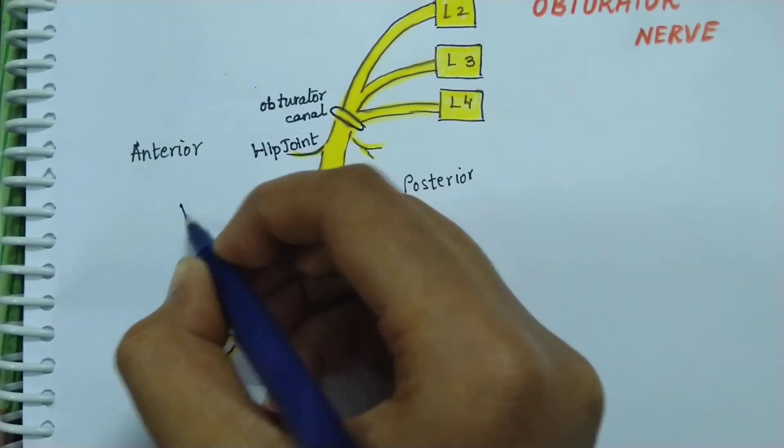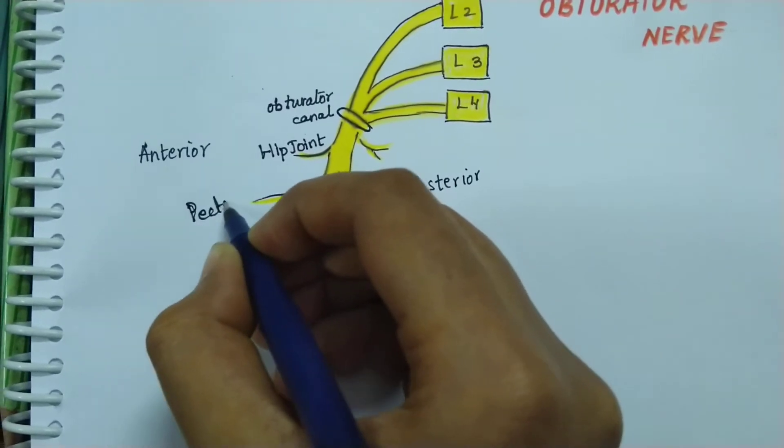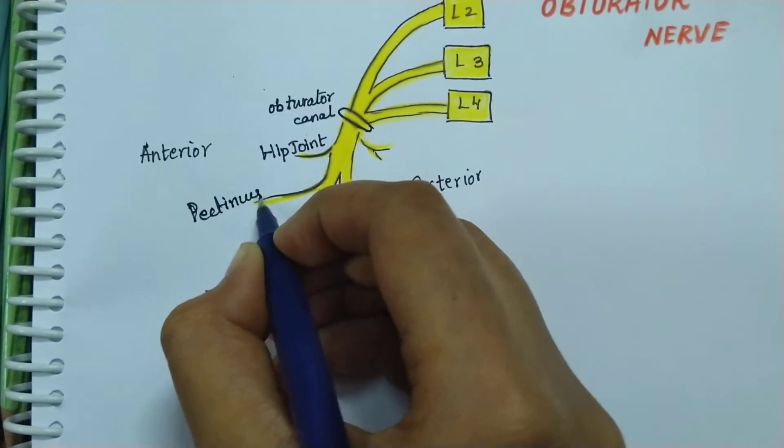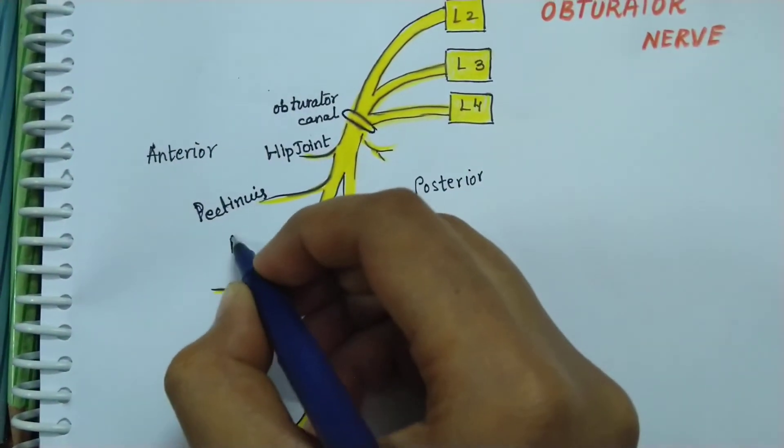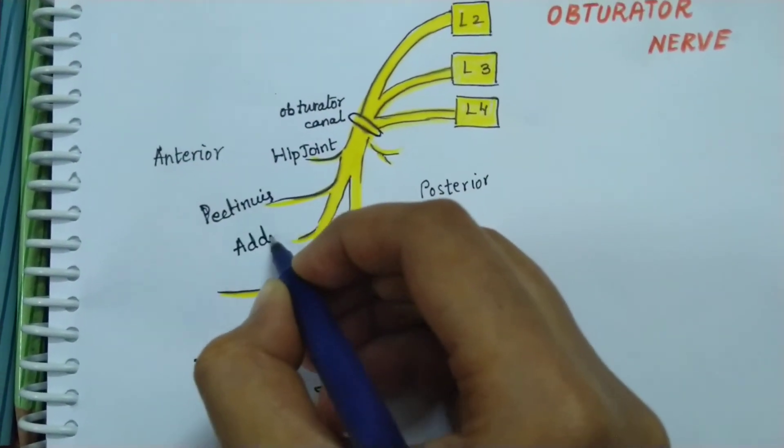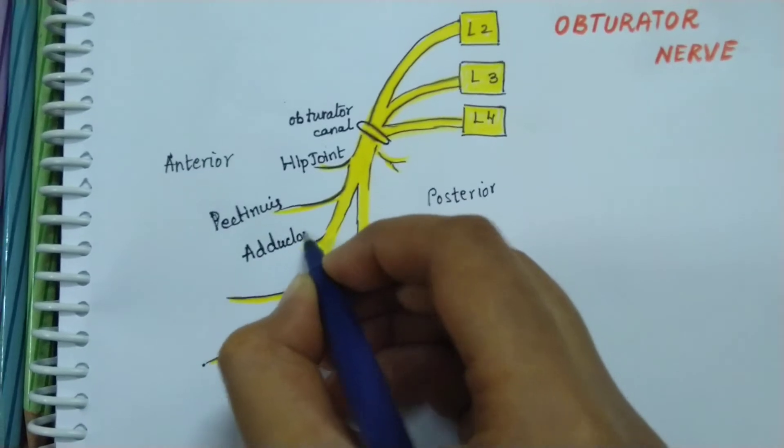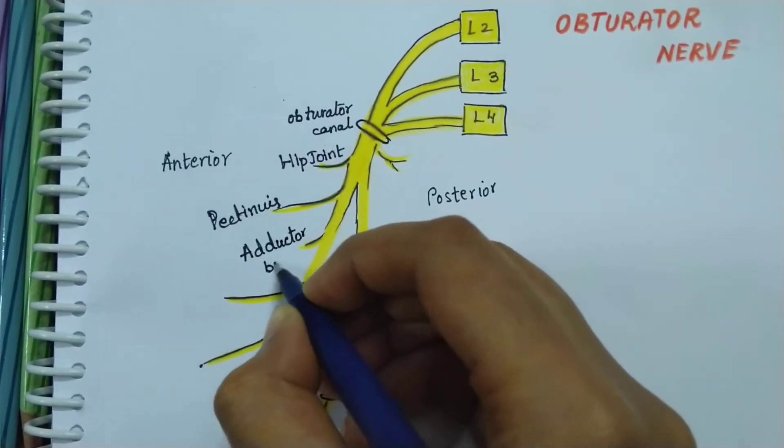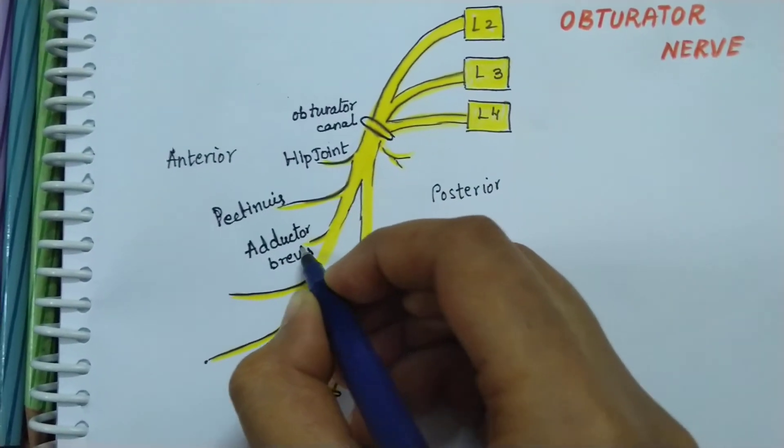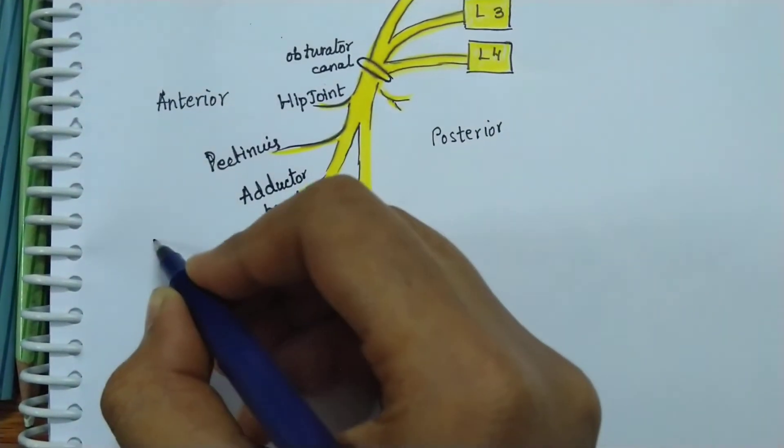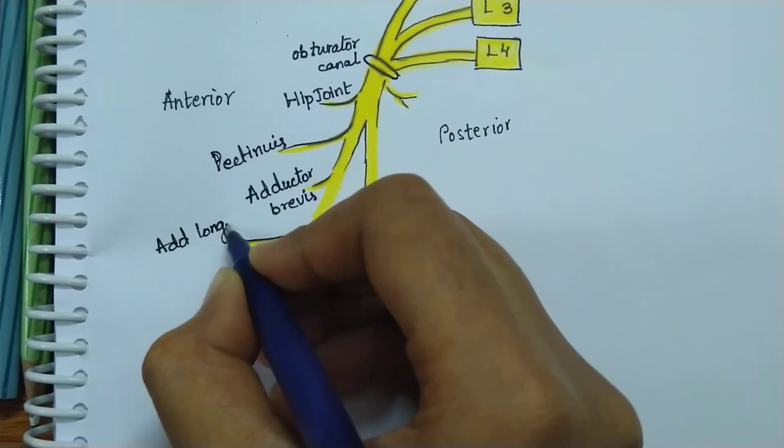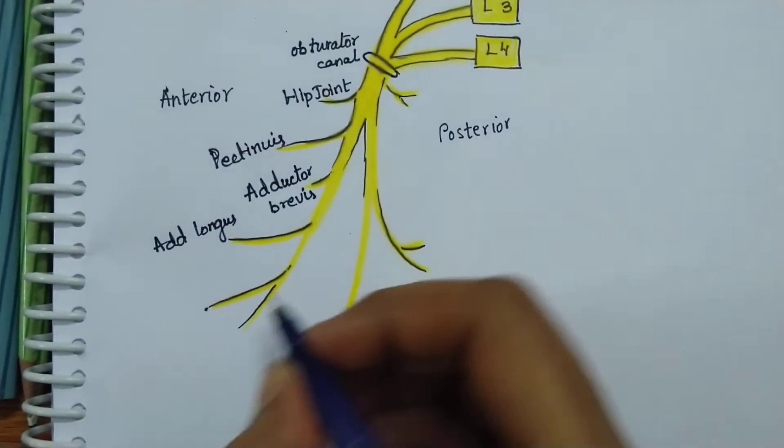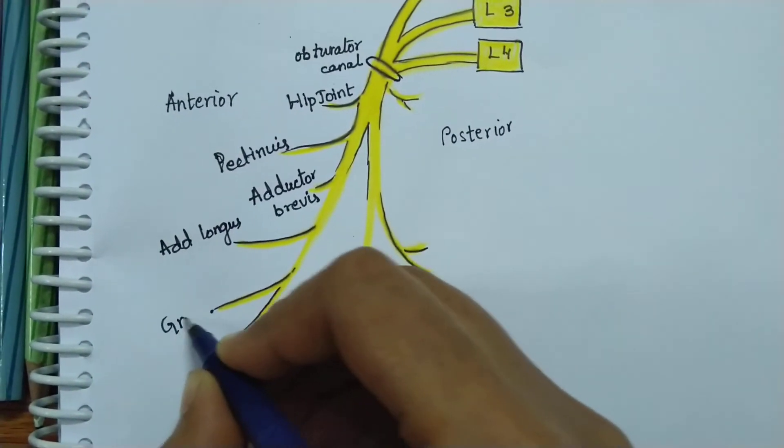It gives a branch to the pectineus and to the adductor brevis as it supplies the adductor compartment. A branch to the adductor longus and a branch to the gracilis.